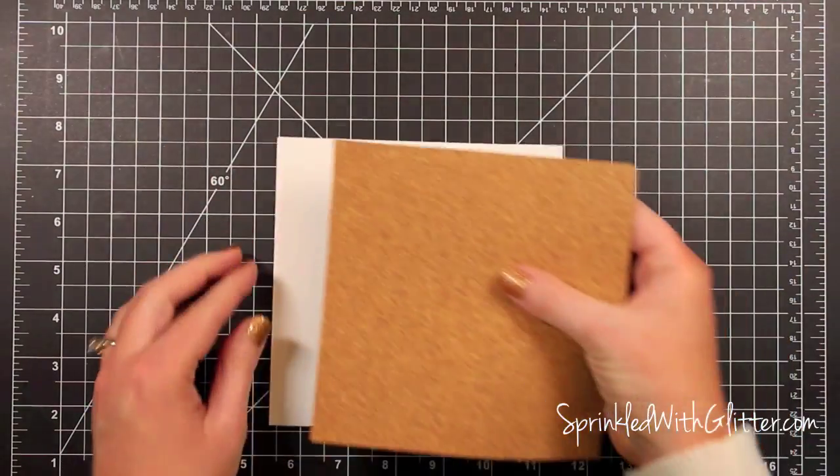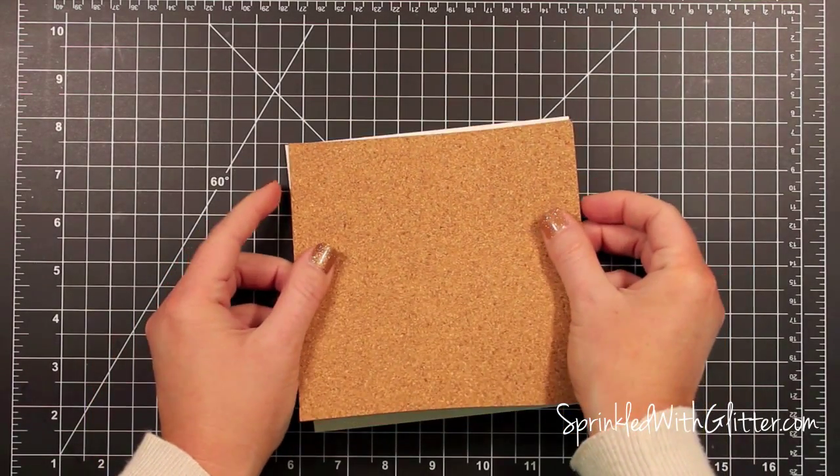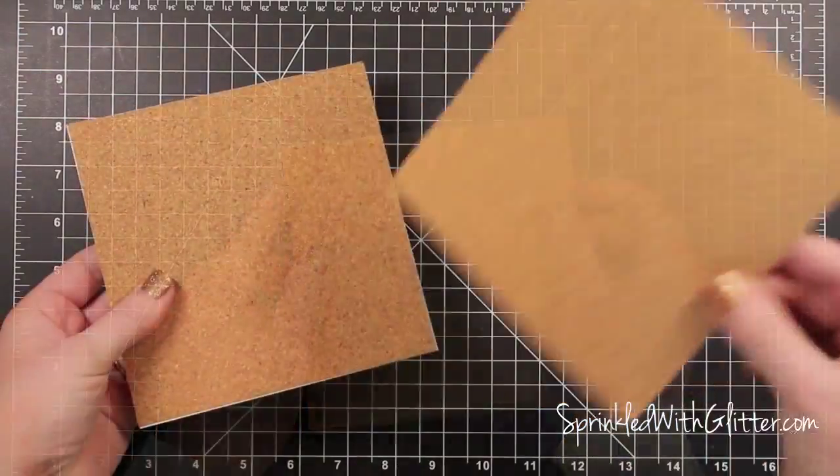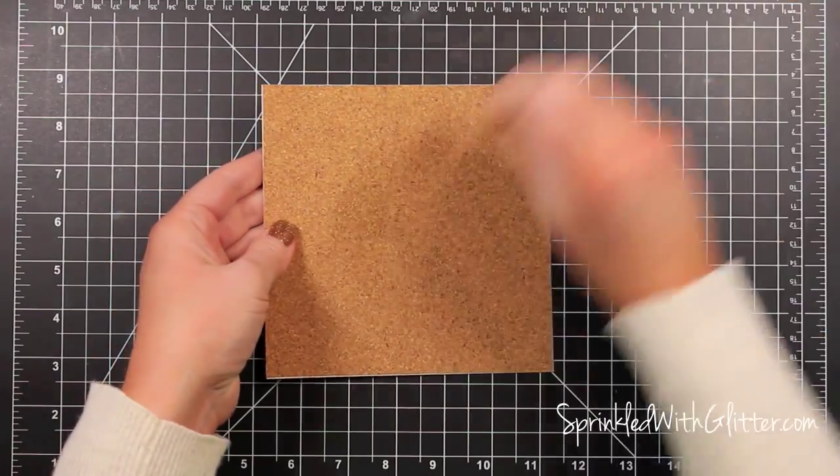So I'm just peeling off the backing to that adhesive backed cork, and I'm going to put it right on top of that piece of white cardstock. Now you can see that one there doesn't have the cardstock back, and it's pretty flimsy.